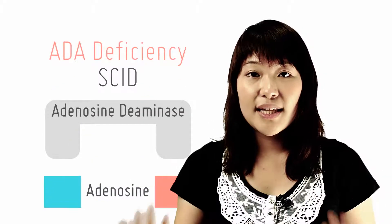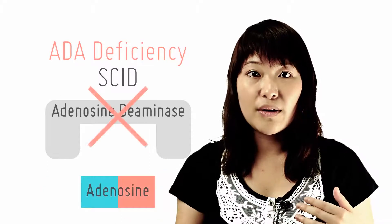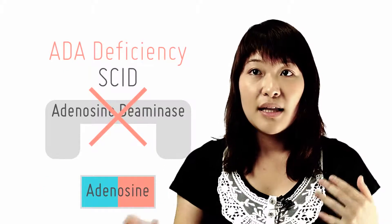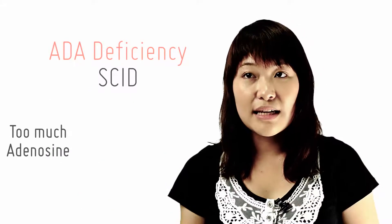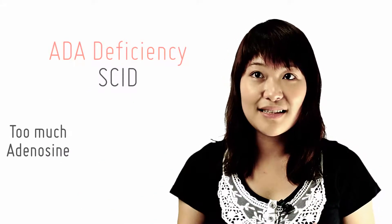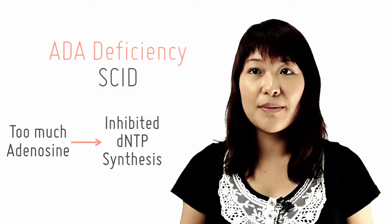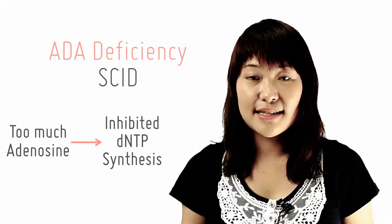In the absence of ADA, dATP will accumulate within the cells of these individuals. dATP will hence inhibit dNTP synthesis and this leads to an overall imbalance of dNTPs, which will affect DNA synthesis.